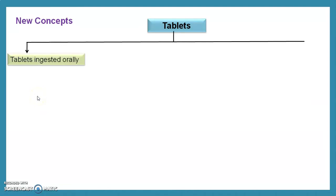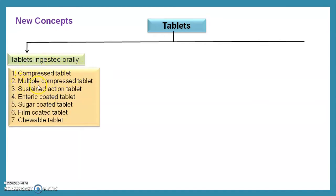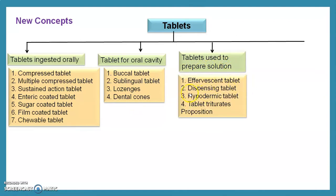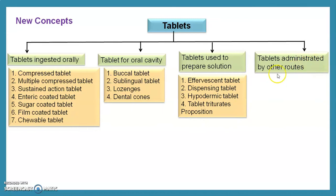Tablets are categorized on the basis of their use. First: tablets ingested orally — compressed tablets, multiple compressed tablets, sustained action tablets, enteric coated tablets, sugar coated tablets, film coated tablets, and chewable tablets. Second: tablets for the oral cavity — buccal tablets, sublingual tablets, lozenges, and dental cones. Third: tablets used to prepare a solution — effervescent tablets, dispensing tablets, hypodermic tablets, and tablet triturates. Fourth: tablets administered by other routes — implantation tablets and vaginal tablets.